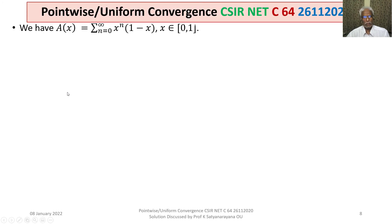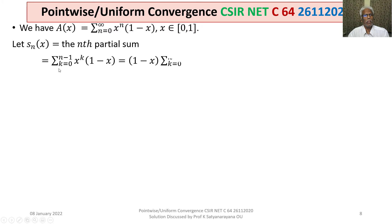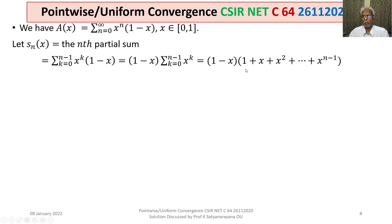Now let us consider the first series, A(x) = sigma_{n=0}^{∞} x^n(1−x), where x belongs to [0, 1]. The nth partial sum S_n(x) = sigma_{k=0}^{n−1} x^k(1−x) = (1−x)(1 + x + x^2 + ⋯ + x^{n−1}) = (1−x) · (1 − x^n)/(1−x) = 1 − x^n.